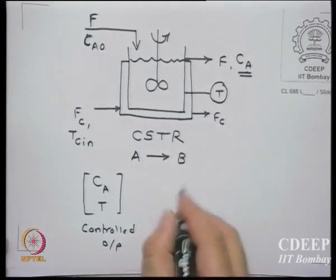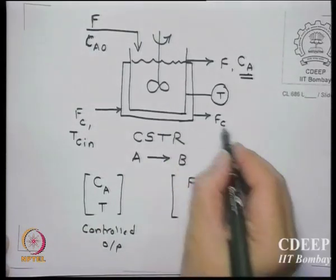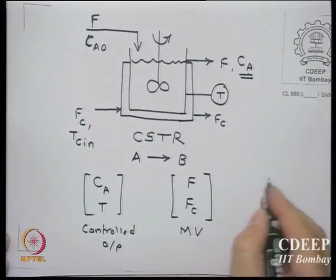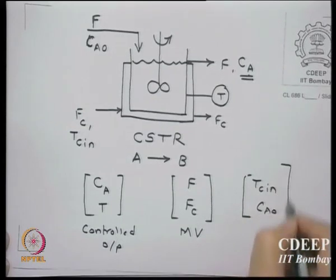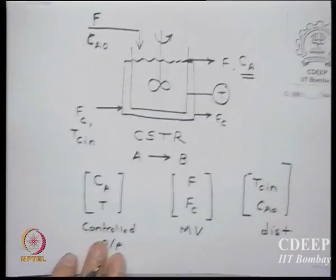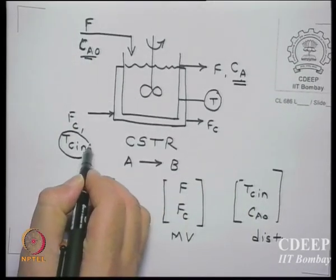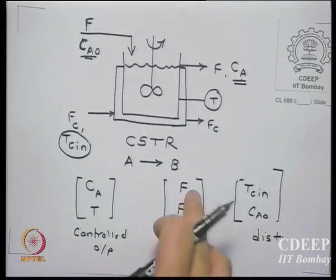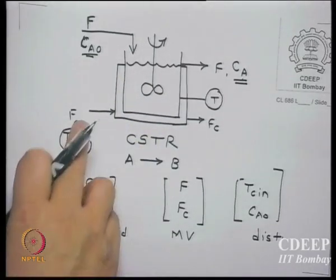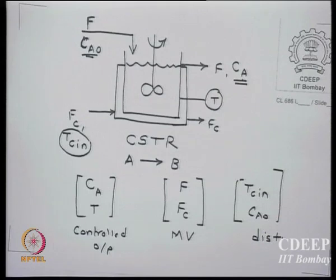The controlled outputs are concentration and temperature - these are the two controlled outputs. The two manipulated variables are the inlet flow rate and the cooling water flow rate. The disturbance variables are the concentration of the feed coming in and the inlet temperature of the cooling fluid, which can fluctuate.